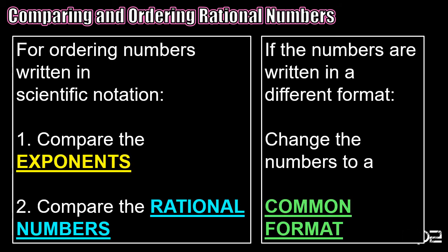Now what if we're ordering numbers written in scientific notation? It's the same process as comparing — you compare the exponents between two, three, or four numbers, and if they all have the same exponent, you compare the rational numbers. But if they're written in different formats, you can change numbers to a common format. If you're stuck on how to convert, check out the fraction, decimal, and percent videos.